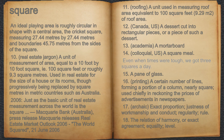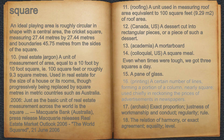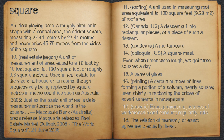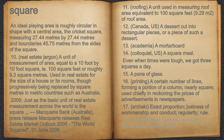For example, even when times were tough, we got three squares a day. 15. A pane of glass. 16. Printing, a certain number of lines, forming a portion of a column, nearly square, used chiefly in reckoning the prices of advertisements in newspapers. 17. Archaic, exact proportion, justness of workmanship and conduct, regularity, rule.